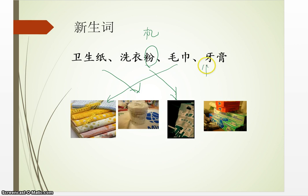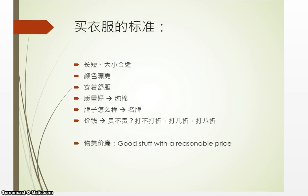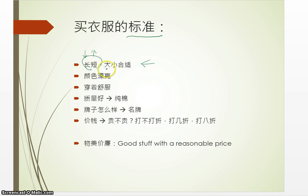牙 means teeth, and 膏 has the phonetic sound 'gāo'. So 牙膏 means toothpaste. 是不是合适? In Chinese, we have another way to form a compound word — using opposite adjectives. Like 长 (long) and 短 (short) together means 长短, the length. 大小 — 大 is big, 小 is small — put together means size. 合适不合适 — does it fit?